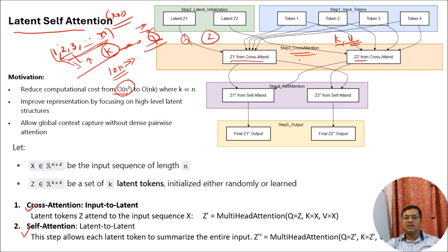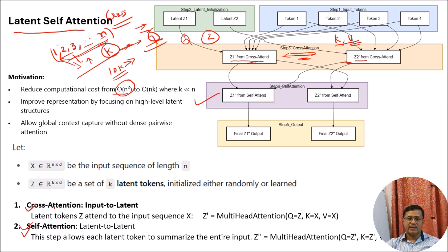But we still have some issues, because for the two latent vectors — for example, here we have just used two latent vectors — we did not check their interactions till here. To check how they are interacting with each other, we apply another layer of attention called self-attention. That part has time complexity O(K²), and the cross-attention part has time complexity O(KN).